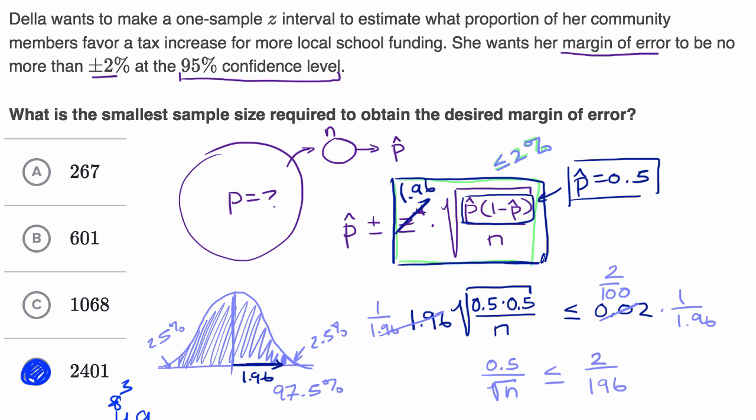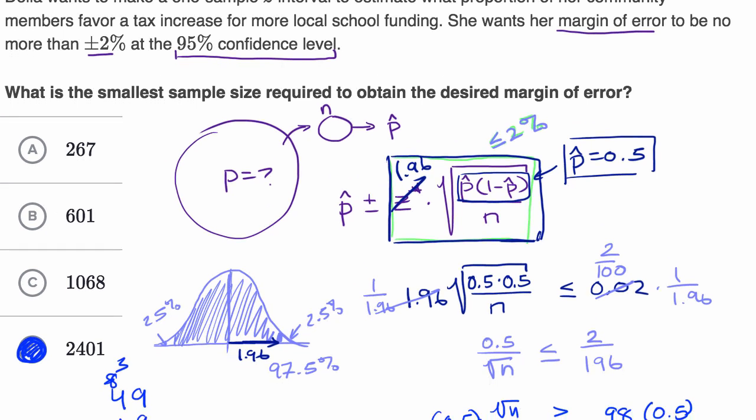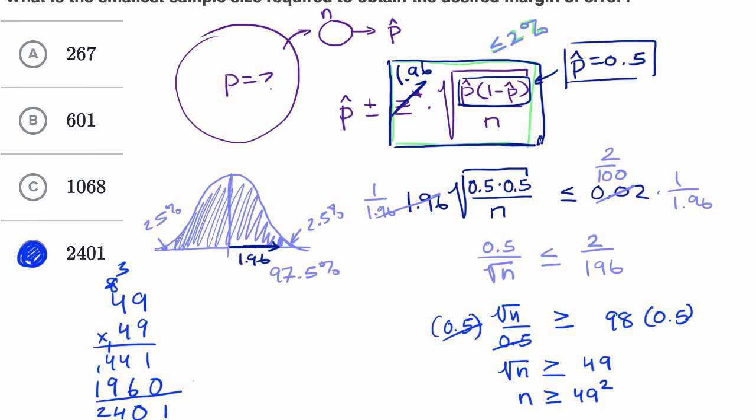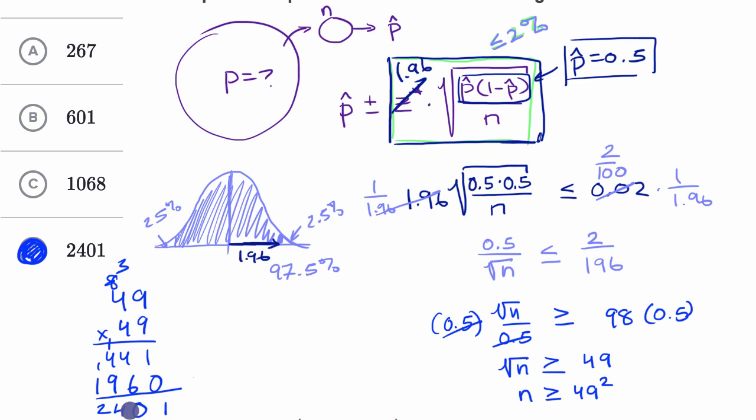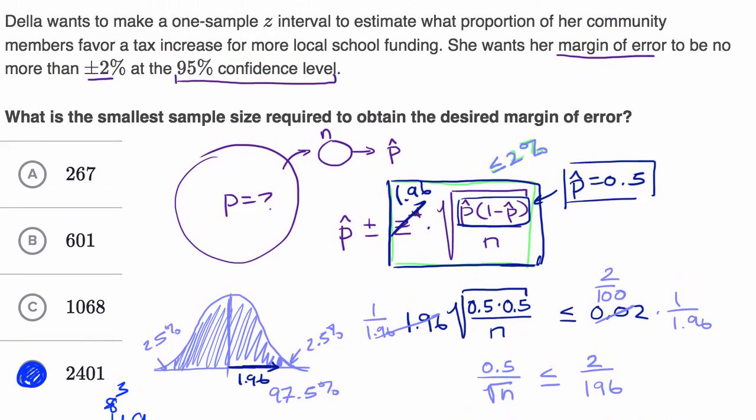Another important thing to appreciate is the math all worked out very nicely just now where I got n to be actually a whole number. But if I got 2,401.5, then you would have to round up to the nearest whole number, because your sample size is always going to be a whole number value.